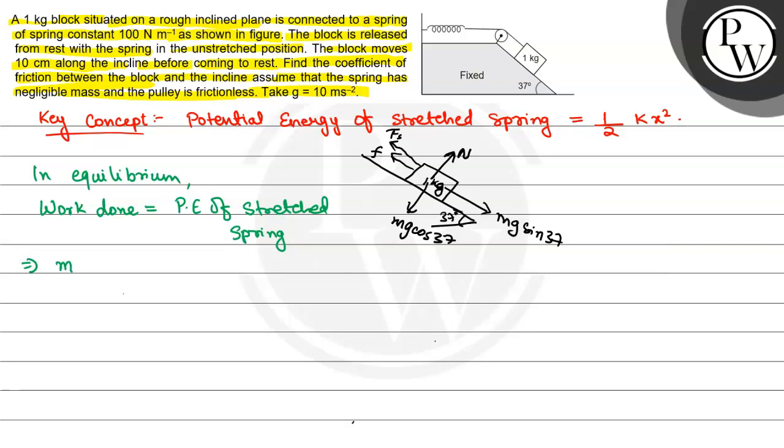Work done equals Mg sin theta minus mu cos theta multiplied by x. That will equal half kx squared.